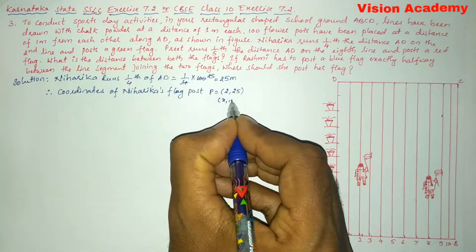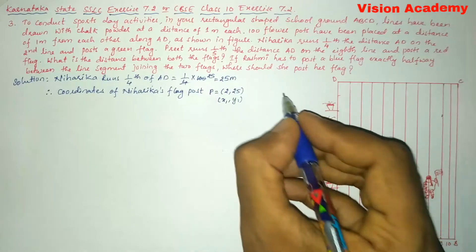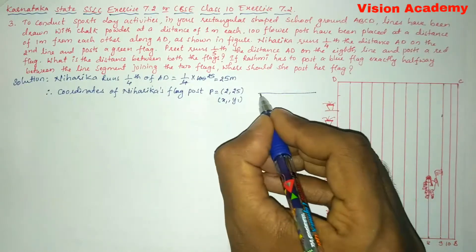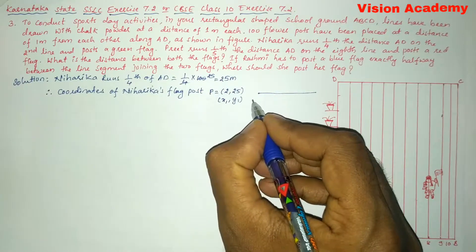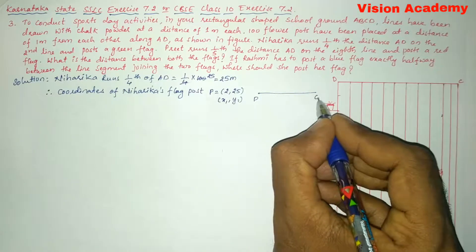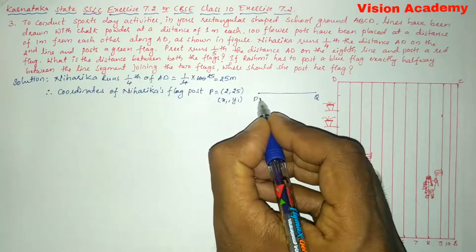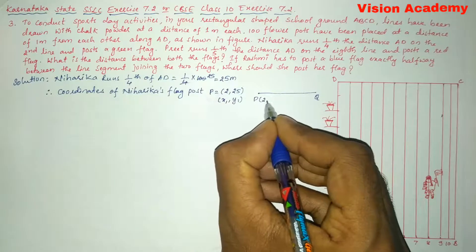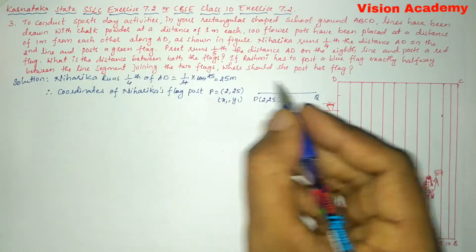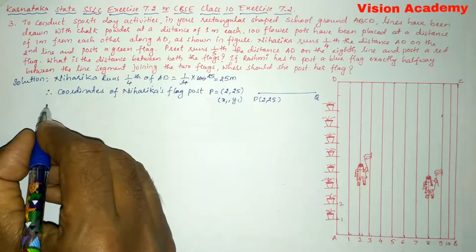So that is x1 comma y1. Let us take a line segment here, P and Q, where P is the point whose coordinates are (2, 25). Now let us move on to the next section.